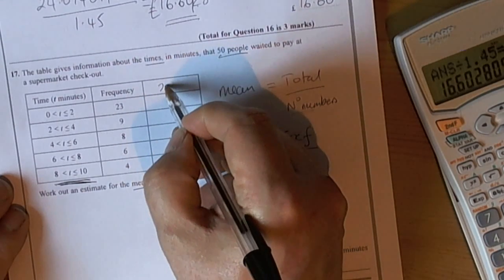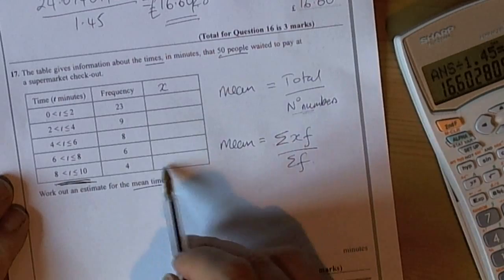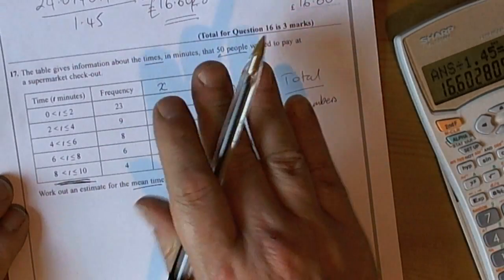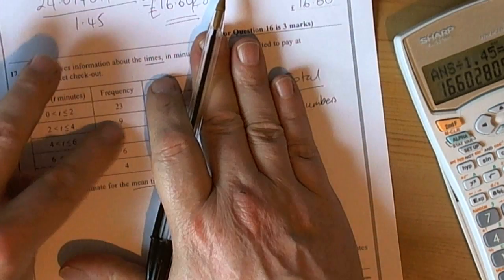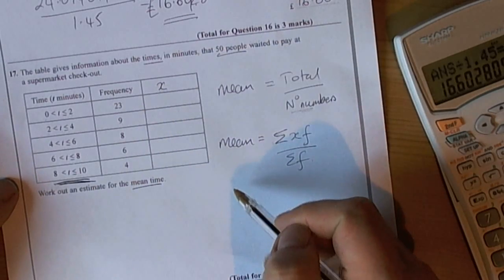So we need to calculate - quite often in these questions the exam board are generous, they tell you that you should be adding something into this table. Just remember that if they give you a table with just two columns (the groups and the frequencies), you have to be ready to add that column to do the calculations.